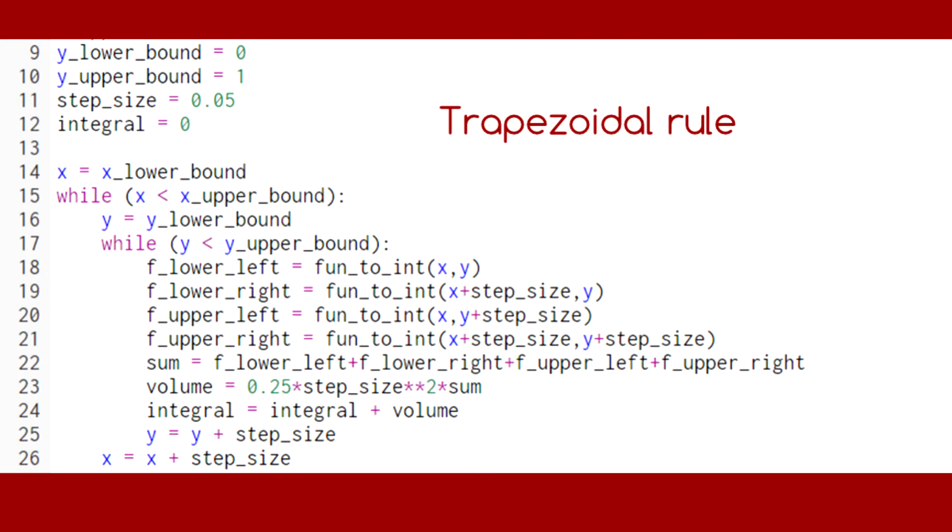In this code, we've implemented the trapezoidal rule. Again, we have one loop inside another and this time we need to evaluate the function at the four corners of each square.